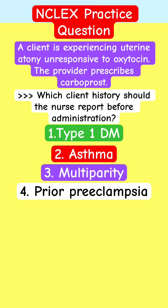The answer choices are: Type 1 diabetes, asthma, multiparity, and prior pre-eclampsia.